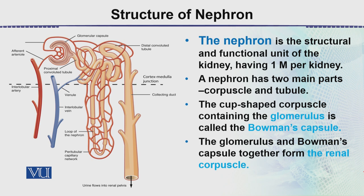These 1 million nephrons are beautifully arranged within the kidney — in the cortical region, the cortex, and the medulla region. These regions are distinct parts of the kidney.